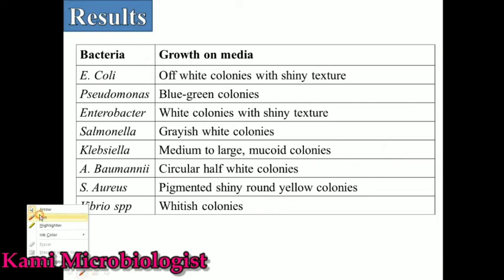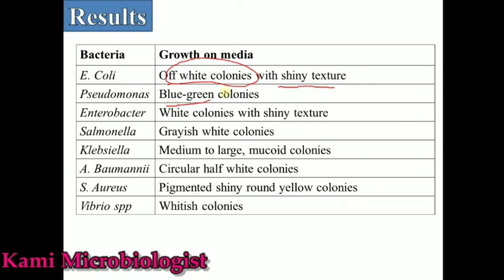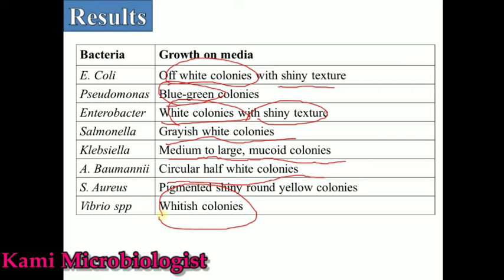E. coli on this media shows off-white colonies with shiny texture. Pseudomonas shows bluish-green colonies with shiny texture. Enterobacter shows whitish colonies with shiny texture. Salmonella shows grayish-white colonies with shiny texture. Klebsiella shows medium to large mucoid colonies with shiny texture. Acinetobacter shows circular half-white colonies with shiny texture. Staphylococcus shows round yellow colonies with shiny texture. Vibrio cholerae shows whitish colonies with shiny texture. However, this media is specially used for bacteriophage isolation and recombinant DNA technology, not for routine bacterial identification.